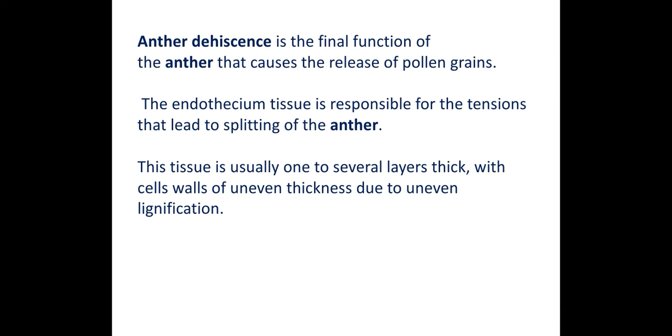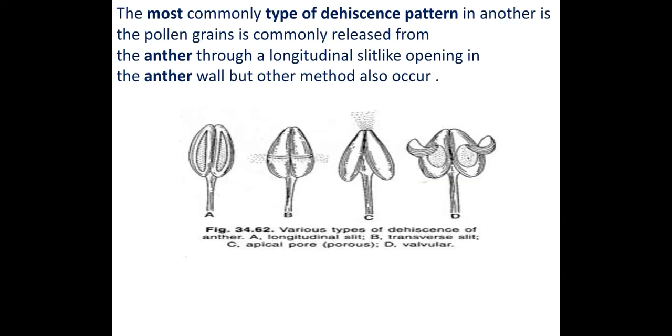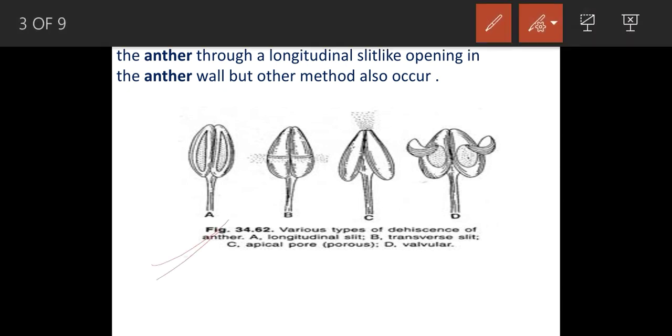The endothecium tissue is responsible for the tensions that lead to splitting of the anther. If someone asks you which layer is responsible for the dehiscence, the answer is endothecium. The endothecium will lose water, which will create tension, and that will create a cavity. We will talk about which are the other types of dehiscence.